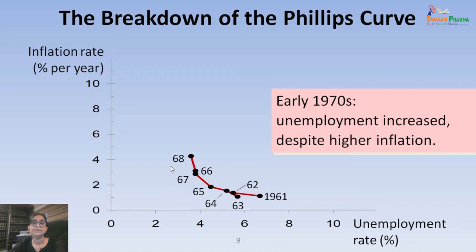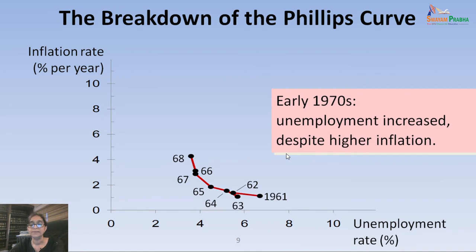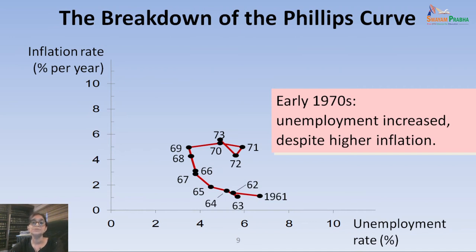However, in the early 1970s, the US economy saw something very different from the stable Phillips Curve. It showed that unemployment increased despite having a higher inflation rate — that is, inflation was there but unemployment was also increasing. This was termed stagflation: even though prices were rising, we were not seeing a fall in the unemployment rate. This is depicted by the 1969, 70, 72, 73 data points, where unemployment is high even though inflation is also high.